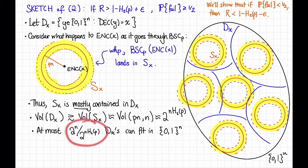So at most, this many D_x's can fit in {0,1}^n. And that means that our code itself, the number of messages we can possibly encode, has size at most this big. So the size of C is at most 2^(n·(1 - H(p))).